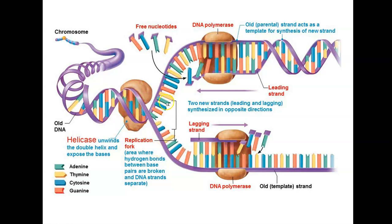After we've unzipped the two strands, DNA polymerase is going to start the process of making a new DNA strand — what's known as a daughter strand — using the original strand, which is known as the template strand, as an actual template. The template strand stays intact and we just use the rules of complementary base pairing to add new nucleotides to the daughter strand that we're in the process of building.